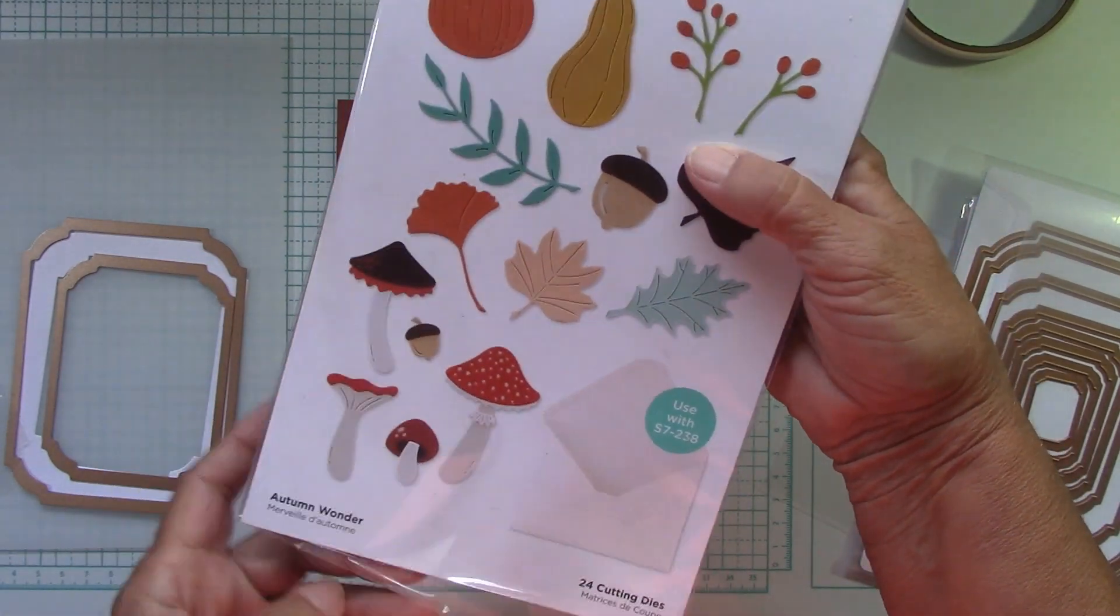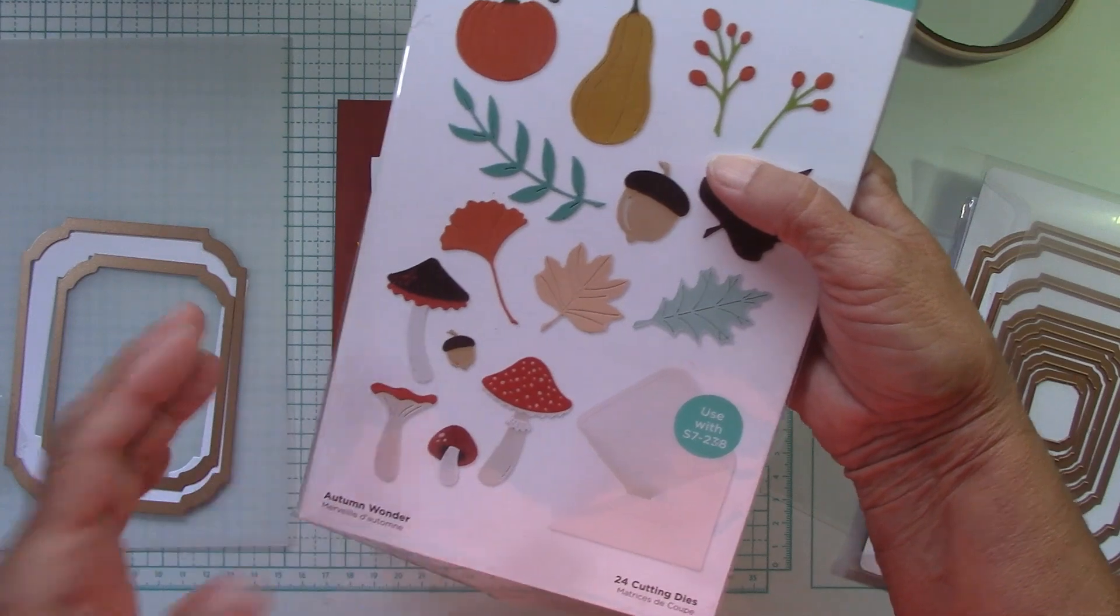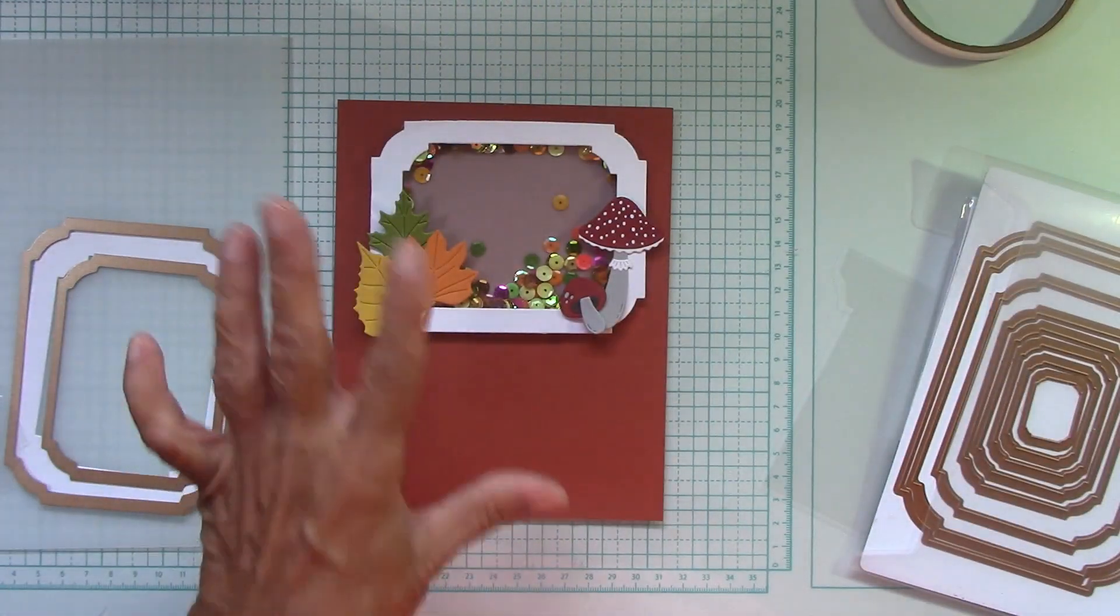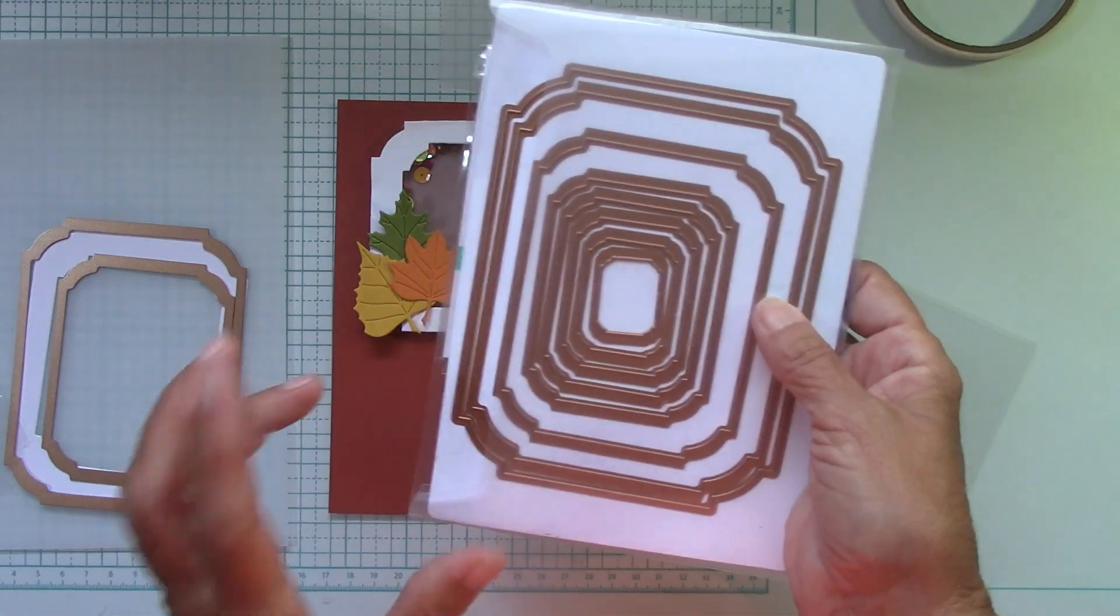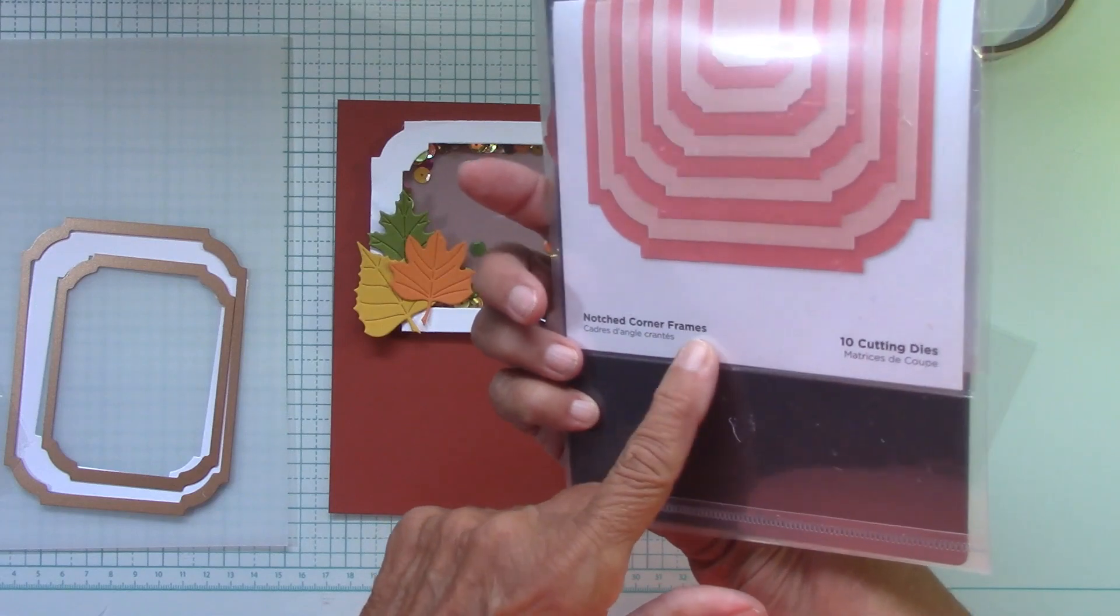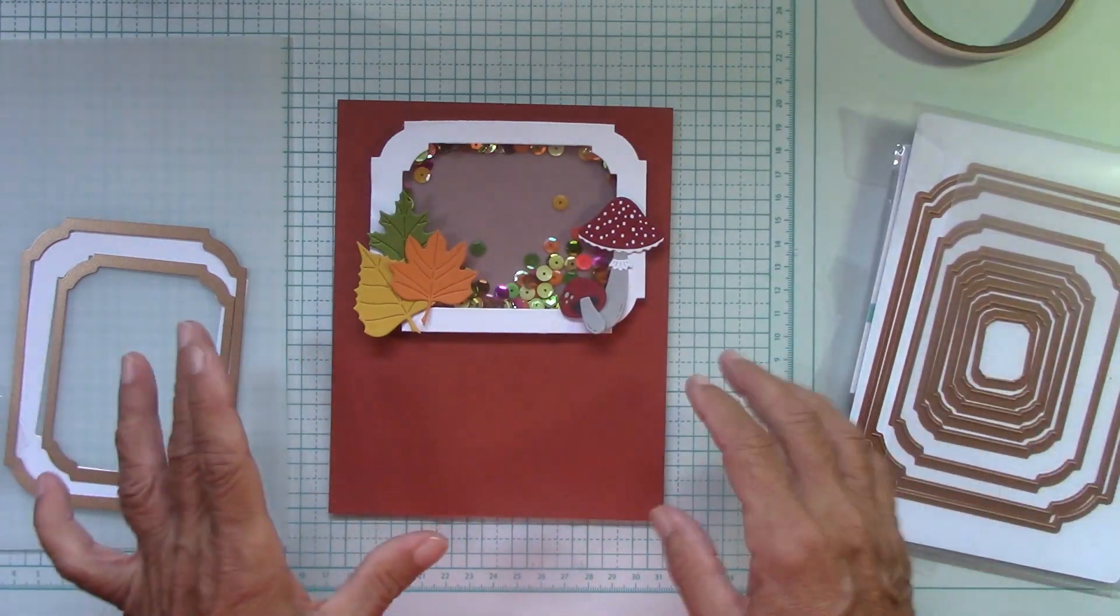I wanted to make my frame in this rusty color. This is actually a Stampin' Up color - Cajun Craze. Then I did some leaves and my little mushrooms. Aren't they adorable? From the Autumn Wonder. This is fantastic. These were from the Envelope of Wonder set. I'm using the notched corner frames, so let's begin.